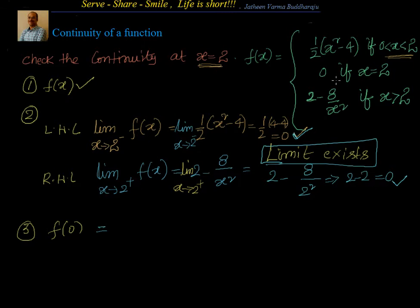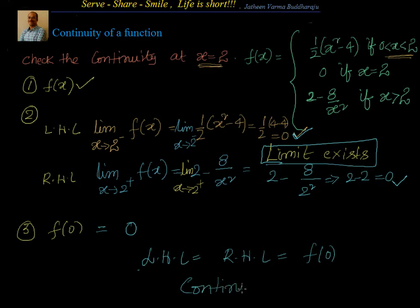Now, f of 2 is equal to 0. So left-hand limit equals right-hand limit, which is also equal to f of 2. Based on this, we can say the function is continuous. One easy way to understand whether a function is continuous on a graph is to check whether you can draw the curve at that particular point without lifting your pen. If you are able to do that, the function is continuous. Let's do one more example.